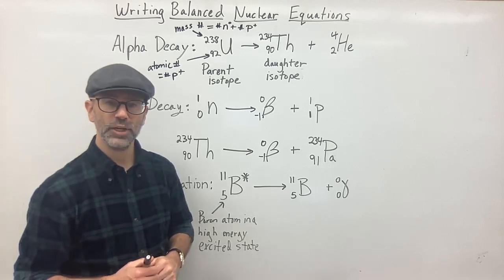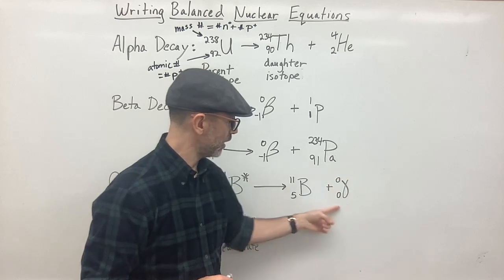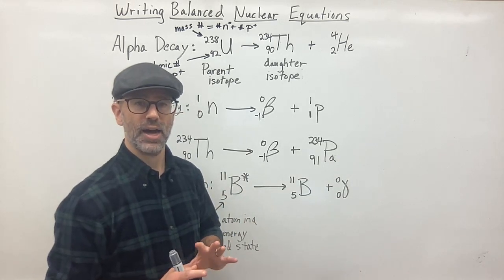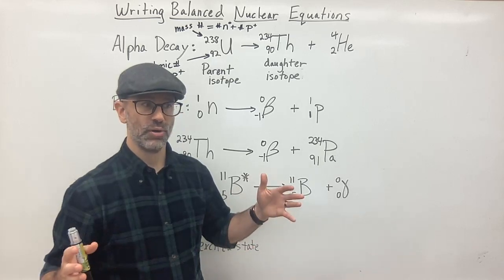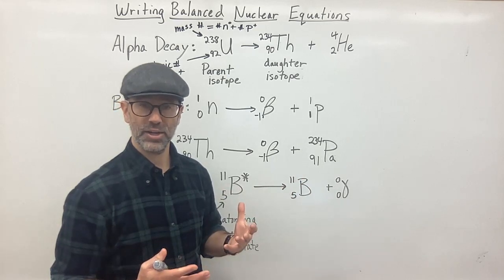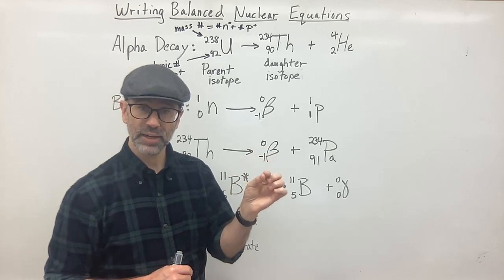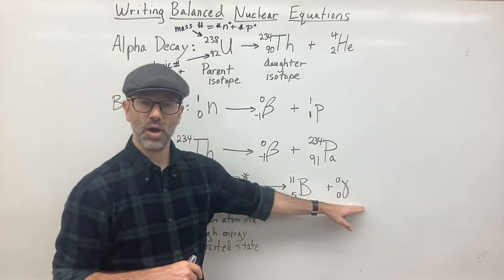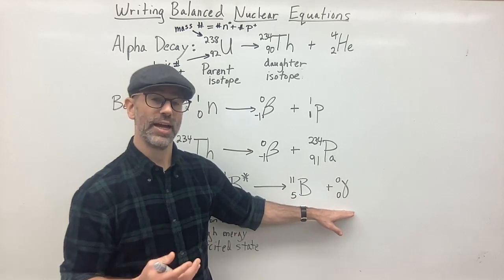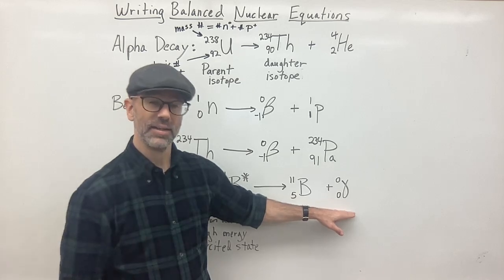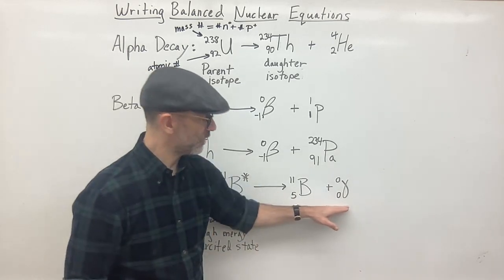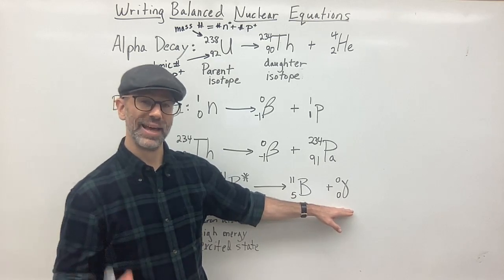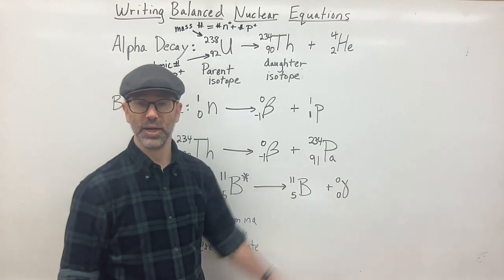Gamma radiation is very high-level radiation — it lies very far to one side of the electromagnetic radiation scale. It has very small wavelengths, and the smaller the wavelength, the higher the energy. Because of that, gamma rays have very high penetrating power. They can go through paper and through your clothes. It requires very thick lead or very thick concrete to block gamma radiation. It's very dangerous.